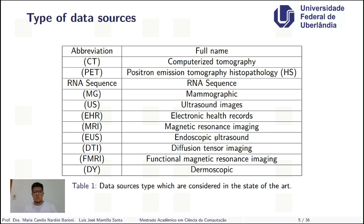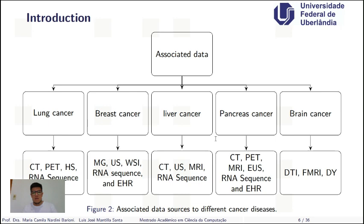There are some types of data sources that we can use for this research. For example, we have computerized tomography, positron emission tomography, histopathology, RNA sequences, mammography, ultrasound images, electronic health records, magnetic resonances, endoscopy, diffusion tensor imaging, functional magnetic resonance imaging, and dermoscopy. These are sources cited in many papers.